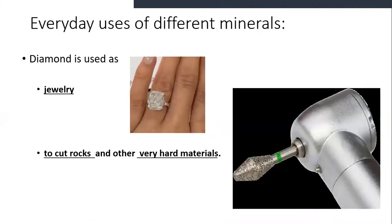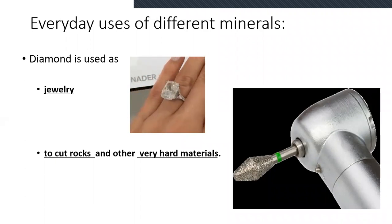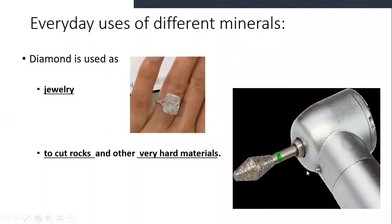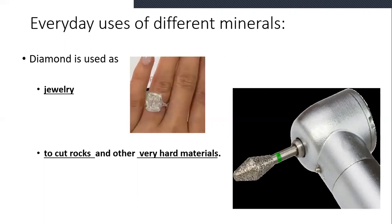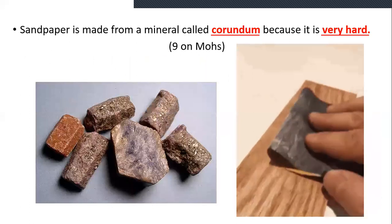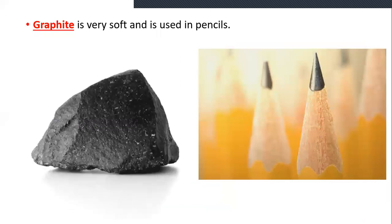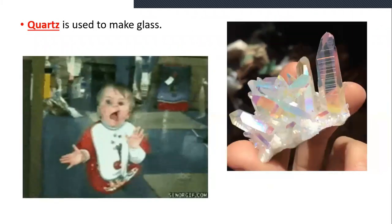Then we learned about the common uses of different minerals. Diamond comes first — we use it as jewelry, but also for cutting and reshaping other minerals and rocks, because diamond is the hardest on the scale. We also learned about corundum — which is very hard, also called sandpaper — used to make hard surfaces smooth. It's number 9 on the Mohs scale, so it's considered really hard. We also learned about graphite, which is used to make pencils, and quartz, which is used to make glass.